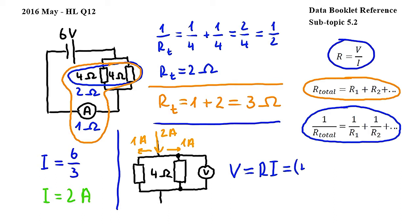Substituting our values, so the resistance, which is 4 ohms, and the current flowing through this resistor, which is 1 ampere, we get 4 times 1, which equals 4 volts, therefore the answer to this question is C.